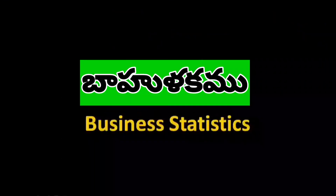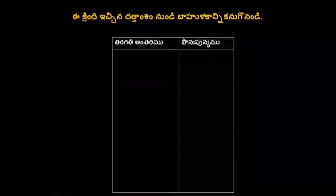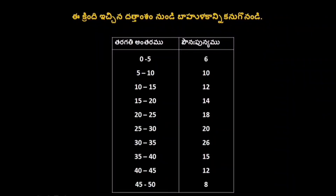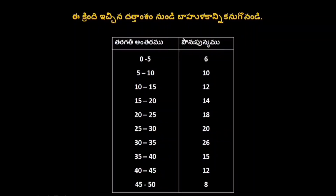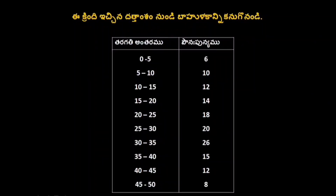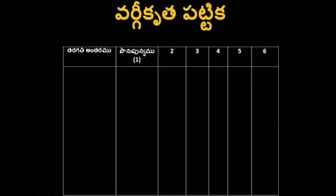We are going to go to the next step — I will present a problem. The problem has two columns with 6 class intervals: 5–10: 6, 10–15: 12, 15–20: 14, 20–25: 18, 25–30: 20, 30–35: 26, 35–40: 15, 40–45: 12, 45–50: 8.